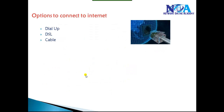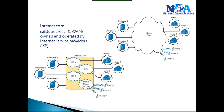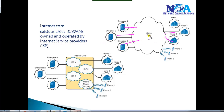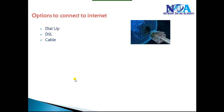Now let's discuss some options to connect to the internet. If you connect everything — all companies, LAN, WAN — we call that the internet, where everyone is connected. All enterprises connect to service providers, service providers connect to customers, and they all connect to each other so you can access resources.